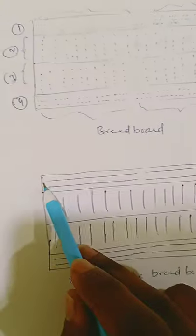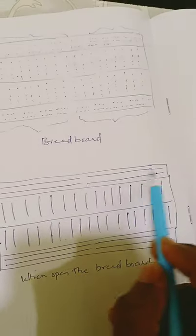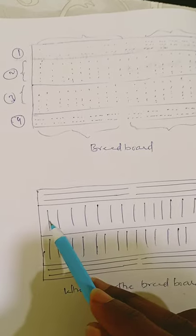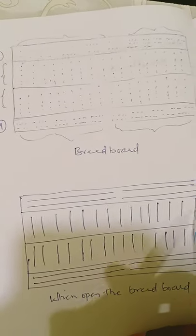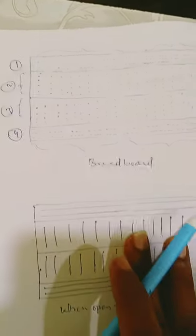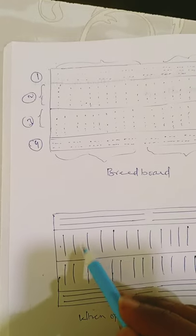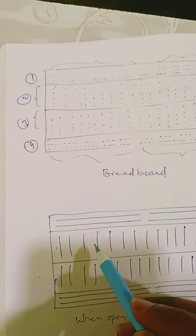Parts 2 and 3 consist of only vertical strips. If you open the breadboard, it will look like this. The first half is divided into 2 horizontal parts, and parts 2 and 3 have only vertical strips. This indicates that these vertical strips have different potentials.